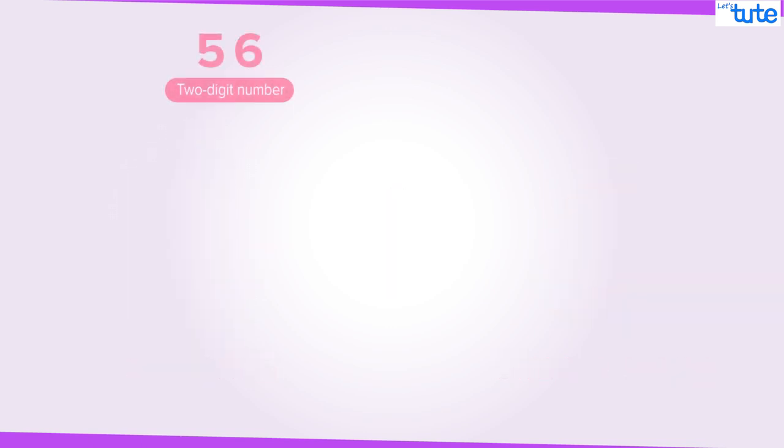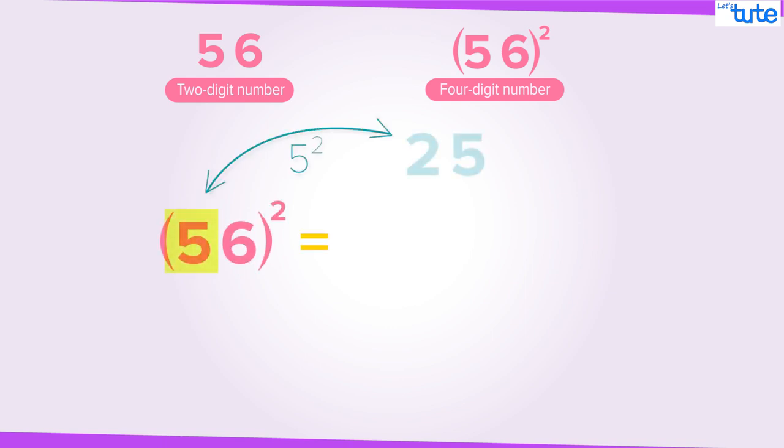Now 56 is a 2-digit number. The square of this number will be in 4 digits. Here, first number is 5. Square of 5 is 25. Next number is 6. Square of 6 is 36. Now, write down 0 here.